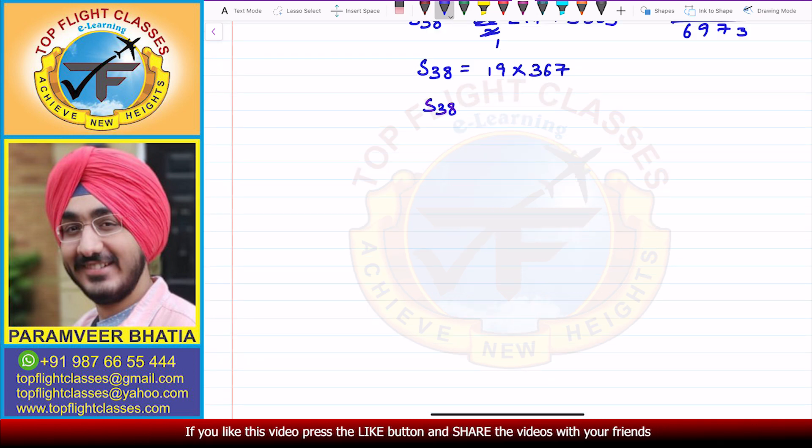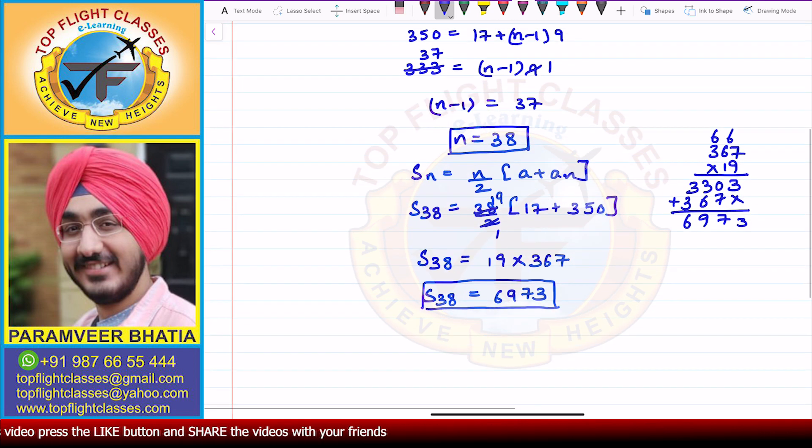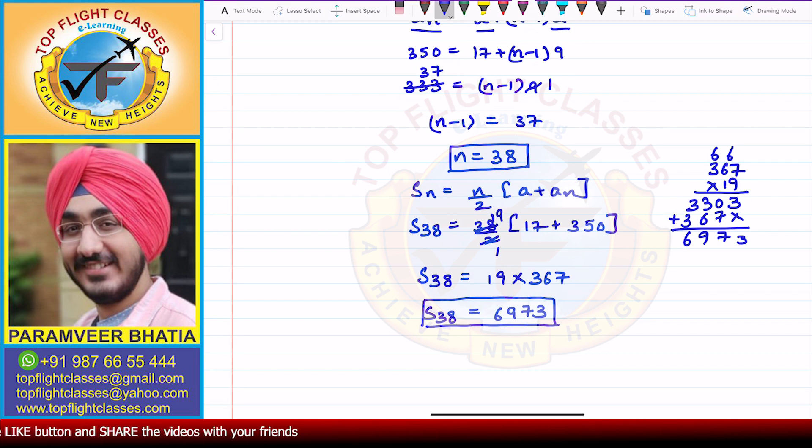So S38, the sum of the first 38 terms, is equal to 6973. So the sum of N terms comes out to be 6973, and N comes out to be 38. This is what is required in this particular question.